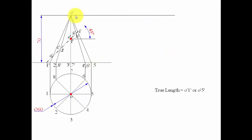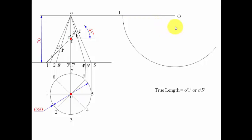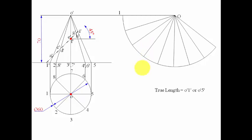To start the development, we draw a line and take point O as center, using O-dash 1-dash as the radius. We draw an arc spanning 141.8 degrees. We then divide this sector into 8 equal parts by bisecting the angle repeatedly — two becomes four, four becomes eight — and number the points 1 through 8 and back to 1.